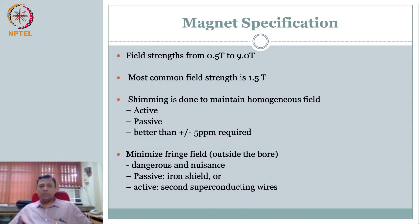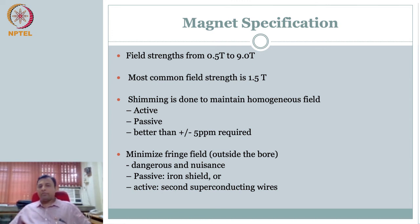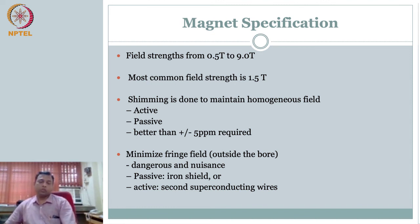What are the typical specifications you get with superconducting magnets? Field strengths from 0.5 Tesla to 9 Tesla, with 1.5 Tesla being most common. With shimming — which gives you a homogeneous field — you get better than plus or minus 5 parts per million. There are several shimming techniques: passive shimming and active shimming. You also get minimized fringe field. These are the specifications typically available with superconducting magnets, which is why they are popularly used.